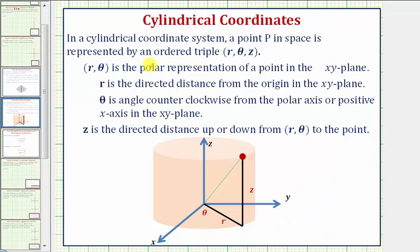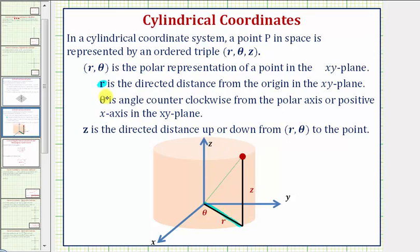For a quick review, r comma theta is the polar representation of a point in the xy plane, where r is the directed distance from the origin in the xy plane, which would be this distance here. Theta is the angle counterclockwise from the polar axis, or positive x-axis, in the xy plane, pictured here.